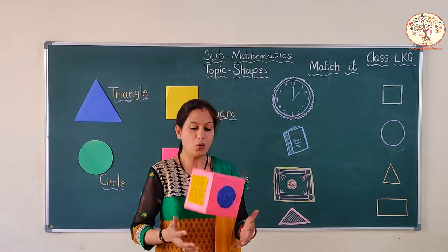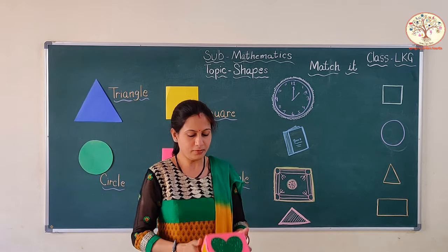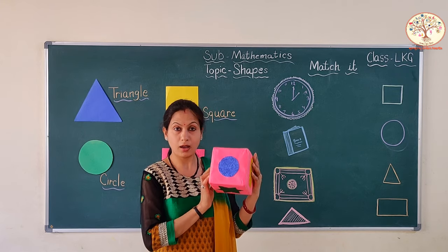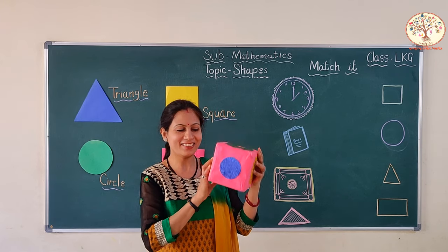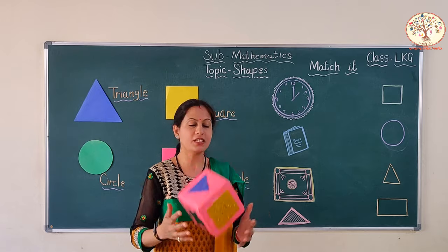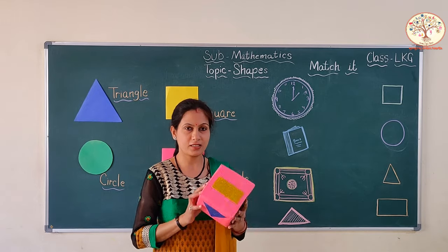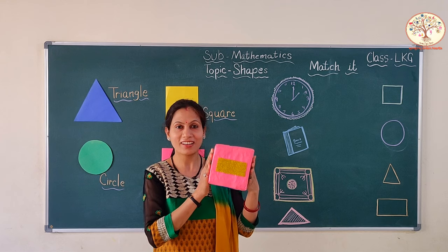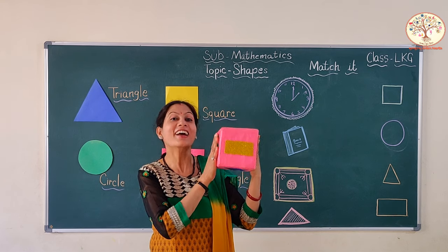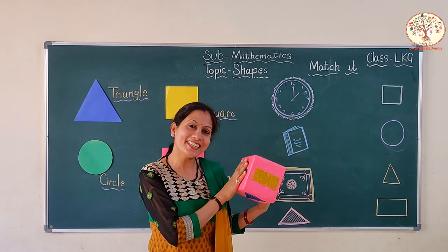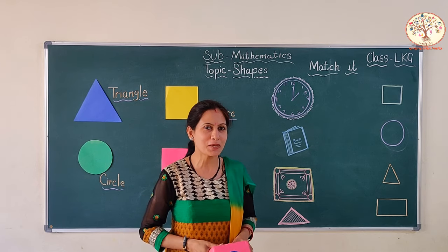Now, what is going to come? Circle. Very good. Now, what is the next? Which shape is this? Rectangle. So, you can recognize all the shapes you have learnt.